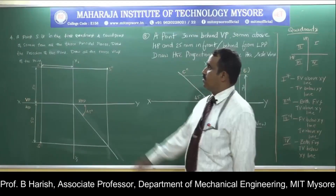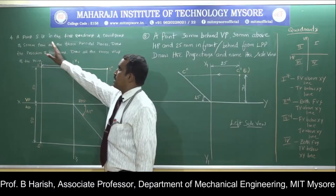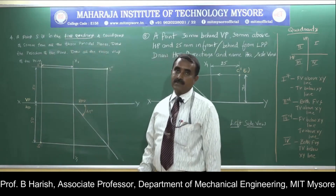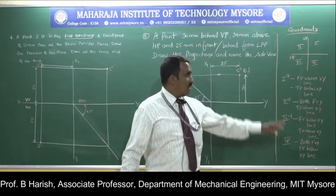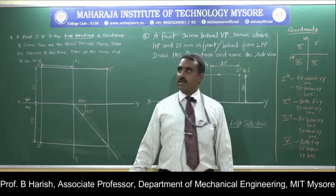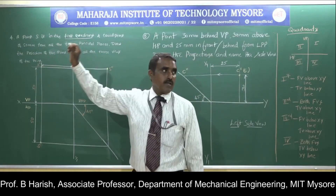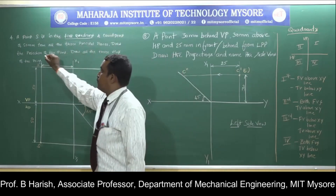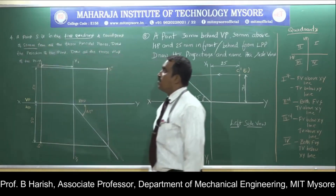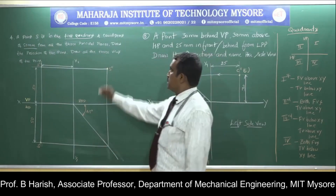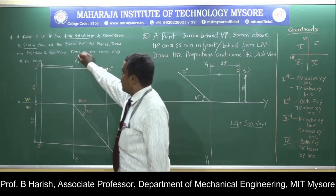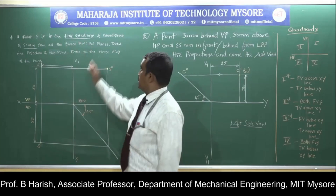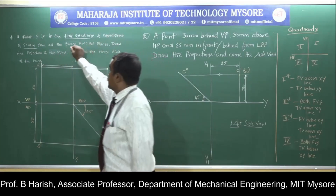We will go to one more problem. The problem runs like this: a point S is in the first quadrant. The quadrant itself is given in the problem. Point S is given in capital letters. It is in the first quadrant and equidistant of 50mm from all the three principal planes. Draw the projection of the point and draw all the three views.